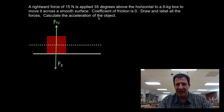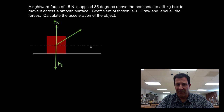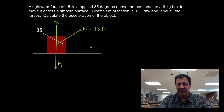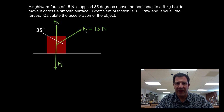The applied force is 35 degrees above the horizontal. I drew a horizontal line to show that the angle is 35 degrees. The applied force is 15 Newtons. We're going to have to break this applied force into its component vectors for the normal force and for calculating the actual acceleration.